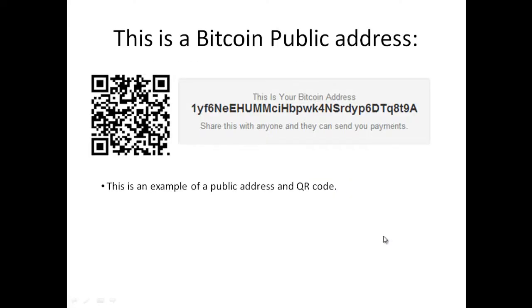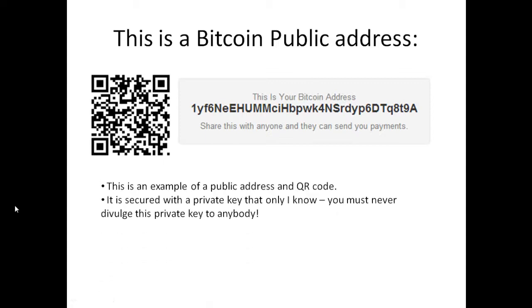Here we have an example of a Bitcoin public address — this is actually one of my addresses. You can also see a QR code representation of your address. If you've got a mobile Bitcoin wallet app you can scan this code and send Bitcoin to my public address. You could literally scan this code right now as you're watching this video and send Bitcoin to me on the other side of the world instantaneously.